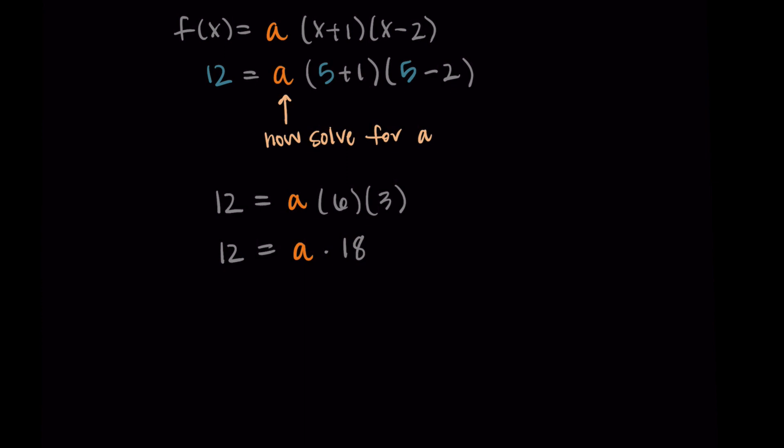And now I just want to solve for a by getting it alone on one side of the equation. So I'll divide both sides by 18. So I have 12/18 = a × 18/18. When I get that 18/18, that's just 1. Basically, I've undone that multiplication by dividing. And so I'm left with 12/18 is a, and 12/18 simplifies to 2/3.